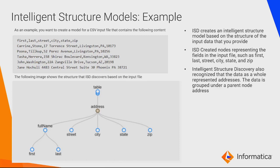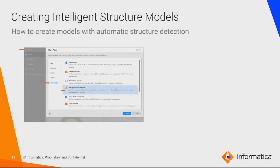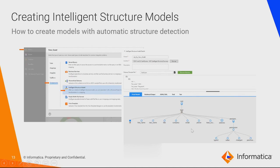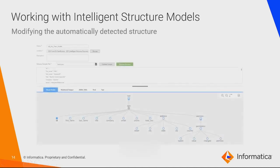We just need to provide the file and the rest is taken care of by ISD. To create an Intelligent Structure Model in Informatica, you go to the component tab, click on the Intelligent Structure UI, and a new window opens. As part of the creation process, you provide one sample file in the schema sample file field. Once you click 'Discover Structure,' the parsing of the sample file starts and a visual model is created on top of the dataset.